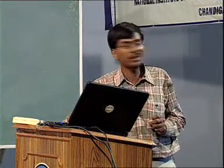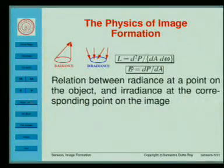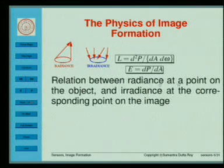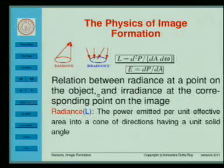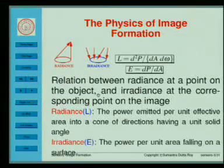Radiance is always per unit solid angle into which the energy is emitted. Essentially the physics of image formation is the relation between radiance at a point on the object — radiance or in a way intensity of a 3D point — and the irradiance at the image. These are just the definitions.